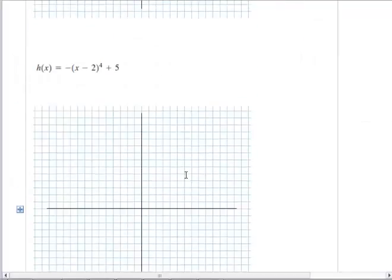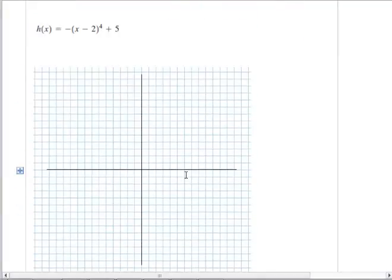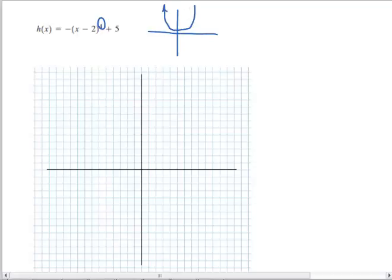Moving on to the next problem, we have another function and handle it just like a normal transformation. In this case, I have a fourth order monomial which looks like a flattened out parabola. It's been vertically flipped over the x-axis, moved right 2, and up 5. So I'm going to take the center, move it right 2, up 5, and draw my fourth order function.